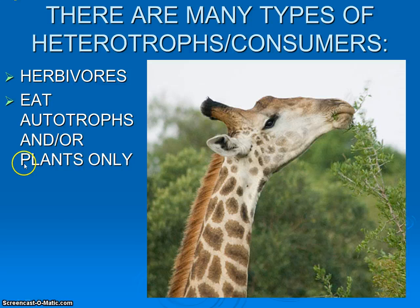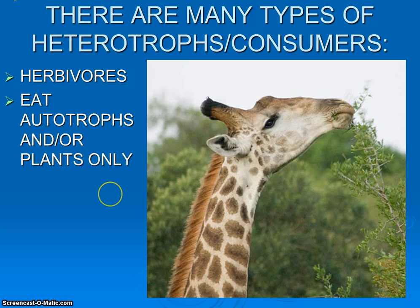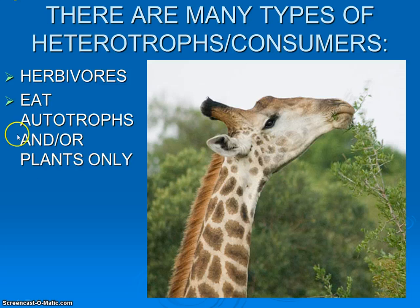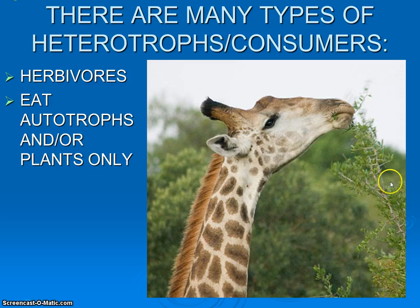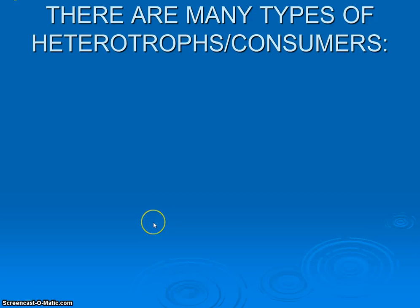One thing that is important here — it doesn't have to be plants. We can actually have things like periwinkles, snails crawling around on rocks in the ocean at low tide, that are herbivores as well, but they're eating types of algae and bacteria stuck to the rocks that are autotrophic. It would be more appropriate to say they're eating the autotrophs, but that's all they eat. They gain all of their energy stored in these leaves by consuming them.